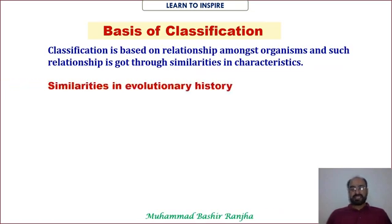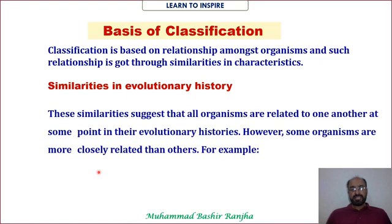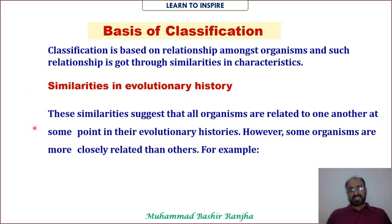When we classify organisms, the first basis is similarity in evolutionary history. These similarities suggest all organisms are related at some point in evolutionary history. However, some organisms are more closely related than others. Organisms sharing the same evolutionary line are placed in one group; those with different evolutionary lines go into separate groups.